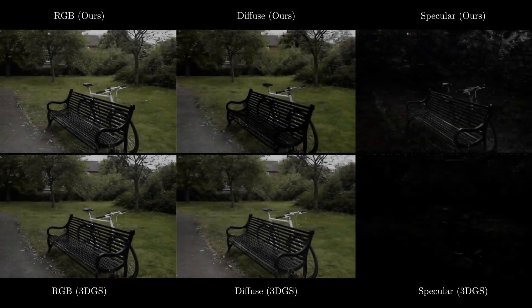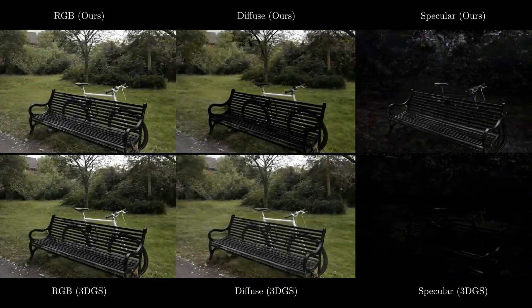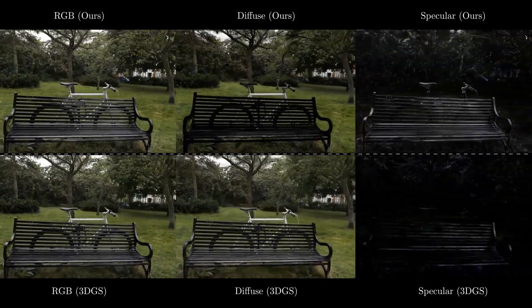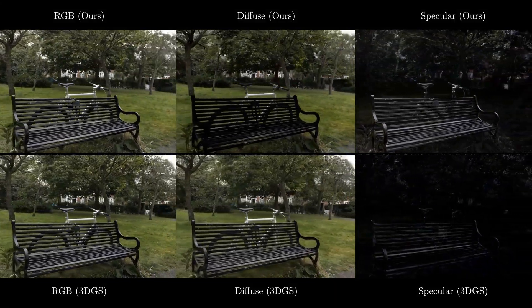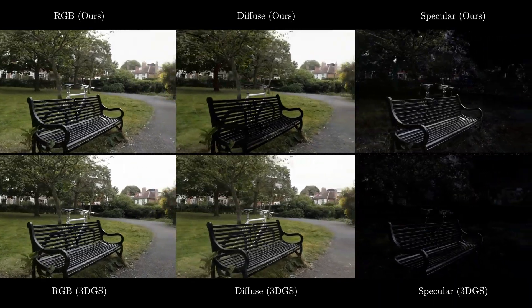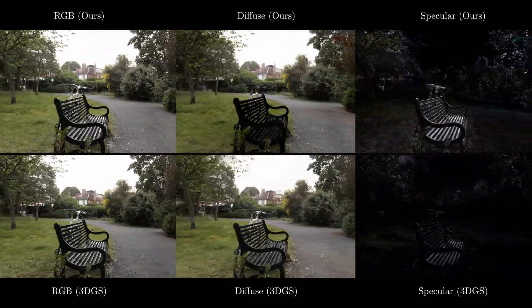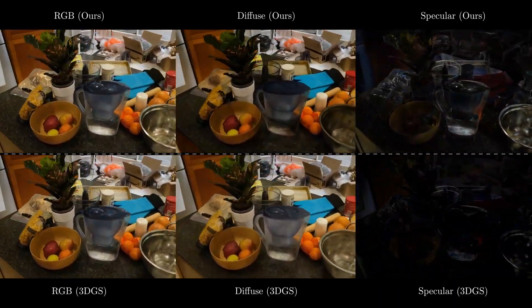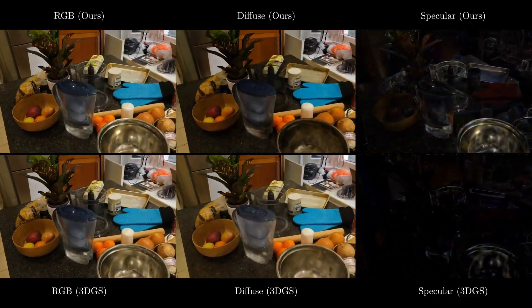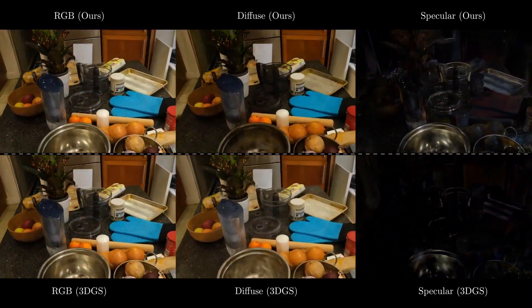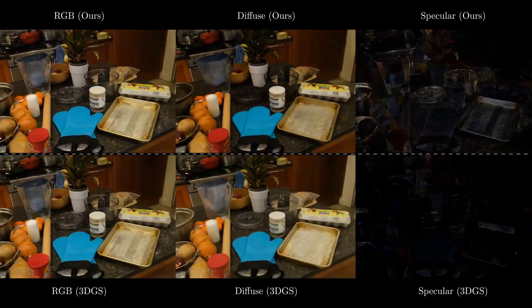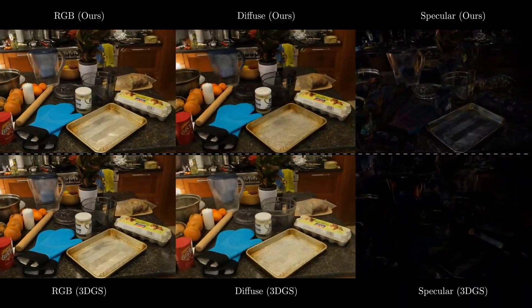In this comparison with 3DGS using low-order spherical harmonics, our method delivers cleaner diffuse textures and sharper, more realistic specular highlights, showcasing its ability to represent high-fidelity scenes.